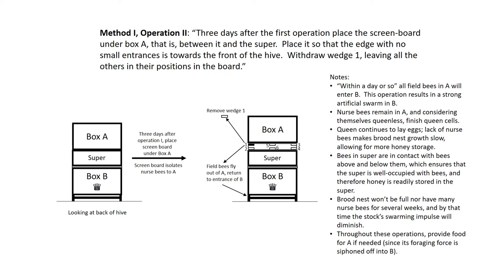Bees in super are in contact with bees above and below them, which ensures that the super is well occupied with bees, and therefore honey is readily stored in the super. Brood nest won't be full nor have many nurse bees for several weeks, and by that time the stock's swarming impulse will diminish. Throughout these operations provide food for A if needed, since its foraging force is siphoned off into B.